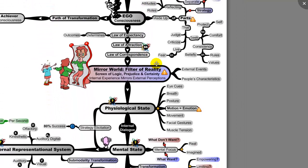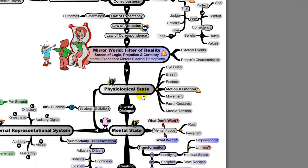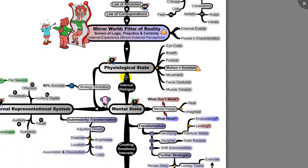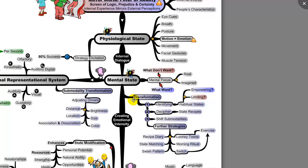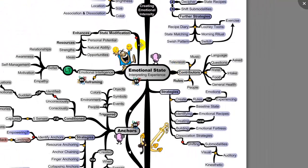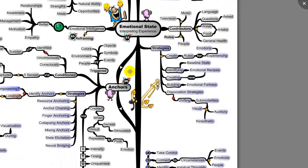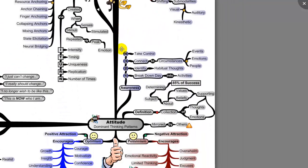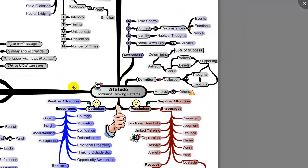As we move here we go through ego consciousness and the mirror world filter of reality. What this basically means is that the internal world reflects the external world. Moving through here to more of the external world — our physiological state, our mental state, what we focus on externally — that combines into our internal representational systems, which is another NLP term. Then we jump into emotional state, where we experience certain emotions, and then anchors, again connected to neurolinguistic programming.